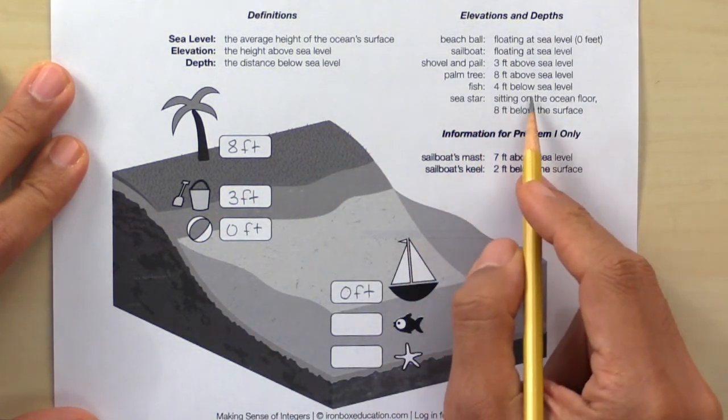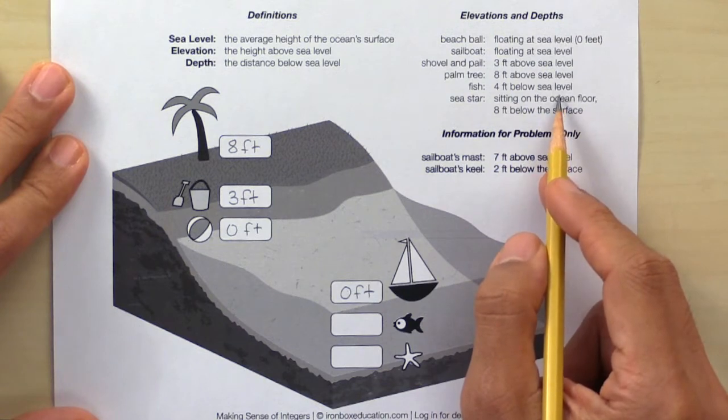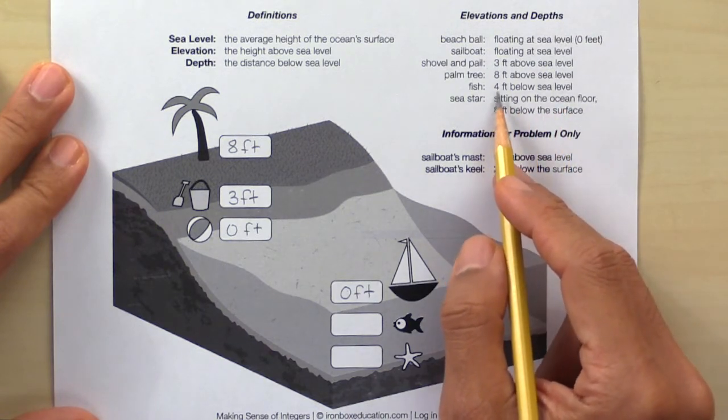The fish is 4 feet below sea level, so since it's below sea level, this will be negative 4 feet.